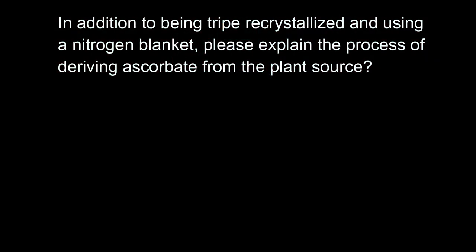Dr. Jaffe, I'd like to know a little bit more about how Potency Guard is produced. I know we do a triple recrystallization and we also process it under a nitrogen blanket, but can you explain to us the actual process from the plant source that we get it from till we actually get to the powder? Well, depending on the time of year, the carbohydrate source will be different. But what we have is an organism that exists in nature that produces ascorbate in the course of its natural metabolism.